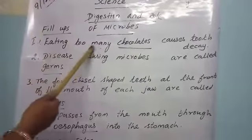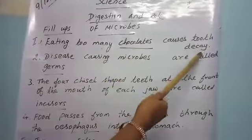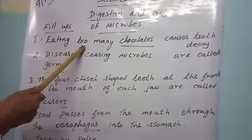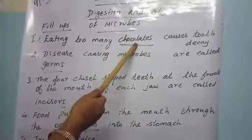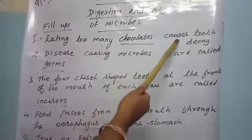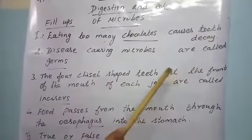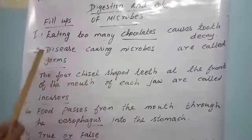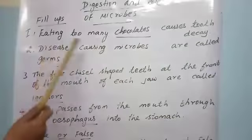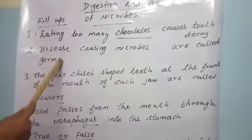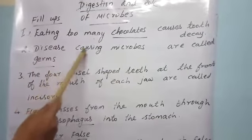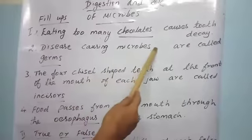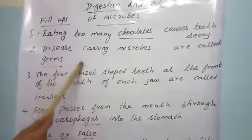Fill in the blanks. Eating too many chocolates causes tooth decay — T-O-O-T-H, D-E-C-A-Y, tooth decay. Diseases causing microbes are called germs — G-E-R-M-S, germs.